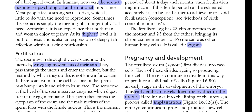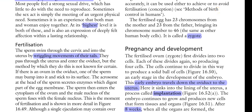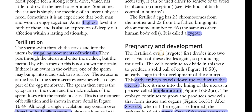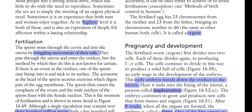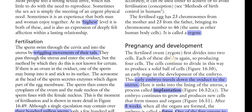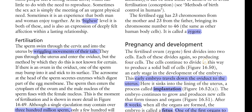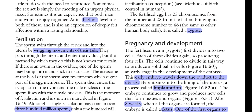This blastocyst is implanted at the posterior wall of the uterus. The fertilized ovum first divides into two cells; each of these divides again, producing four cells. The cells continue to divide to produce a solid ball of cells, called the morula stage.